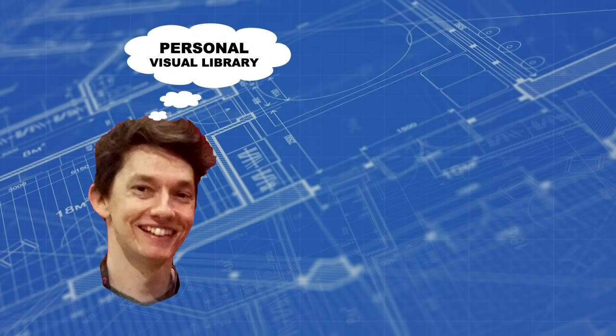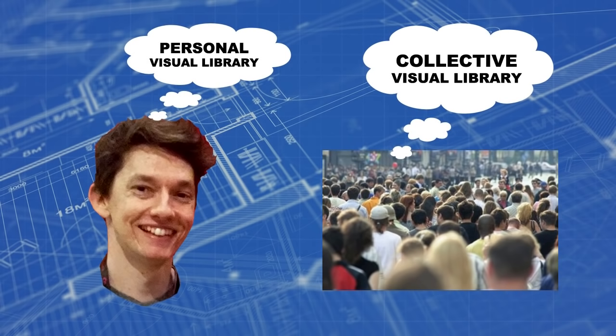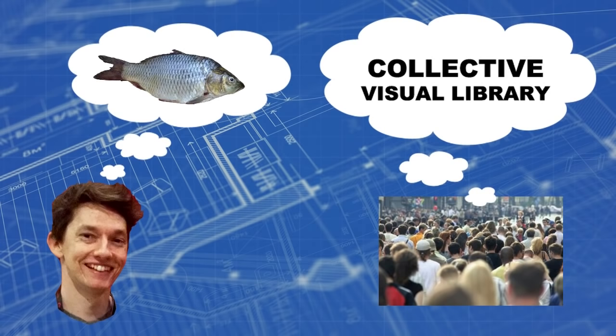Alright, let's discuss some important layers to visual libraries. Of course, we have our personal visual libraries, but there is also something important that we can call the collective visual library. This just refers to all aspects of the visual library that are universally shared by most of society.